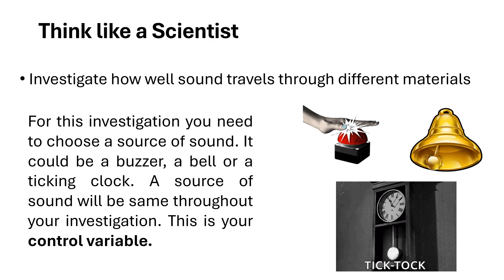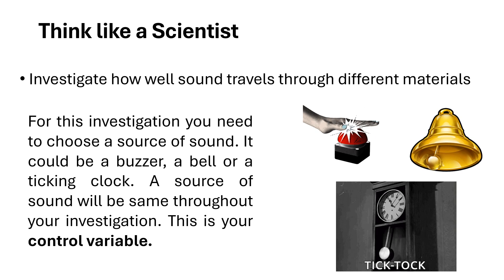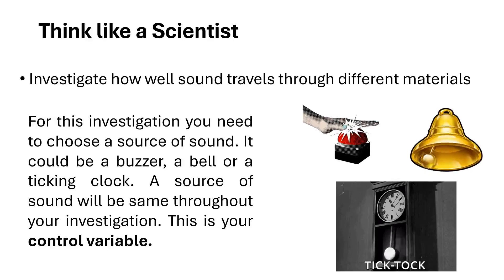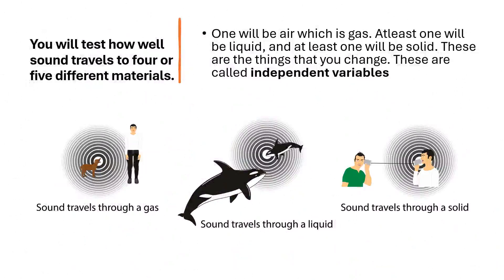Think like a scientist. Investigate how well sounds travel through different materials. For this investigation, you need to choose a source of sound — it could be a buzzer, a bell, or a ticking clock. The source of sound will be the same throughout your investigation; this is your control variable. Now you can test how well sounds travel through four or five different materials: one will be air which is a gas, at least one will be a liquid, and at least one will be a solid.